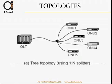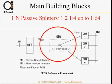First, you can make a tree topology. As you can see, it's using a 1-to-N splitter. You have one fiber coming from an OLT, from the passive optical network port, up to the ONU. Here you can see an example of 5 ONUs, but as we discussed before, you can have splitters from 1 to 2, 1 to 4, up to 64.